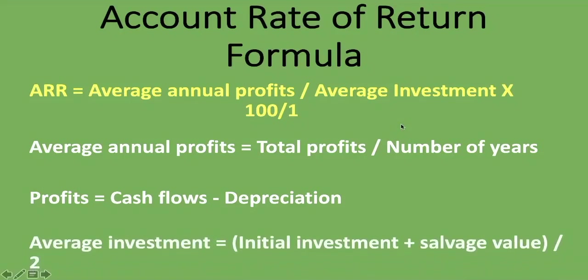For the average investment, we take the initial investment — how much the company needs to invest in the project — plus the salvage value or residual value, and divide that total by two. If there is no salvage value, it's simply the initial investment plus zero, divided by two. That gives you your average investment, and that is how you work with the ARR formula. Now let's get into the example.